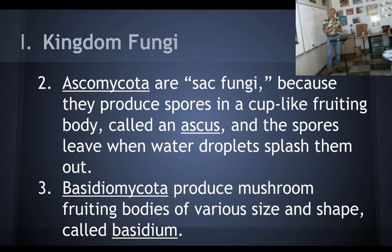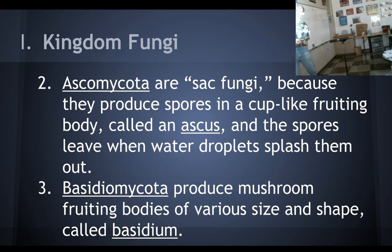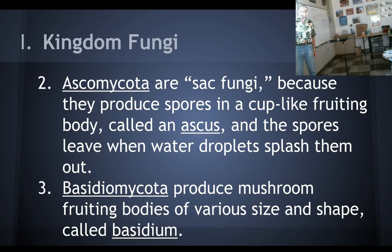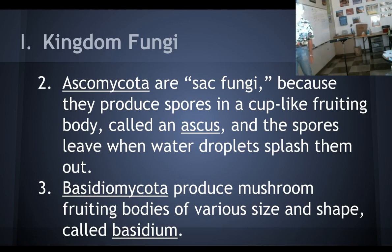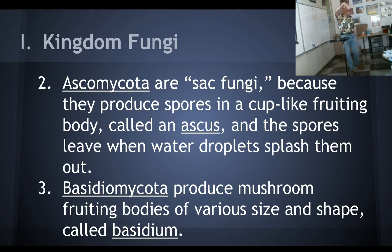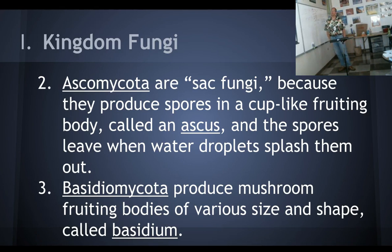Basidiomycota produce mushroom-fruiting bodies of various sizes and shapes, and the mushroom is called a basidium. So an ascus is the name of an upside-down cup mushroom, and the phylum that makes them is ascomycota. A basidium is the technical name for a mushroom, and the phylum that produces them is basidiomycota. If you can remember that an ascus is a cup and a basidium is a mushroom, you'll always remember ascomycota and basidiomycota — cup funguses and mushroom funguses.